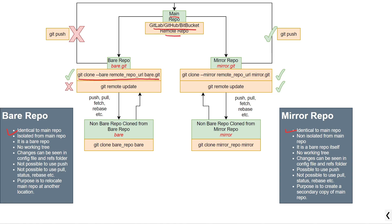Similarly, if you want to create a mirror repository from the main repository, you can use this command which will create a mirror repository. Here, bare.git and mirror.git are the folder names in which you want to clone the content of the main repository. So using these commands, we will have a bare repository called bare.git and a mirror repository called mirror.git, and both will be identical to the main repository.